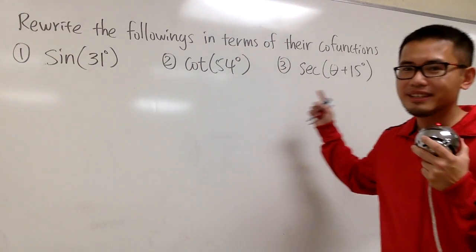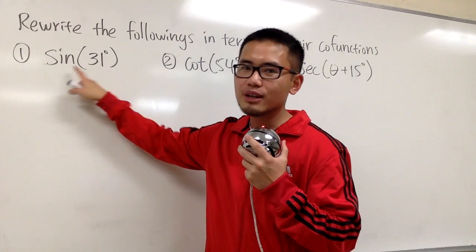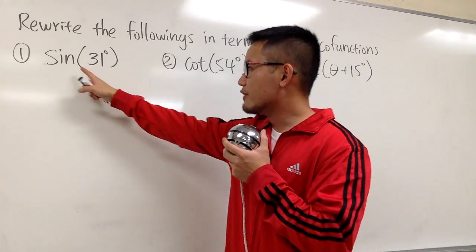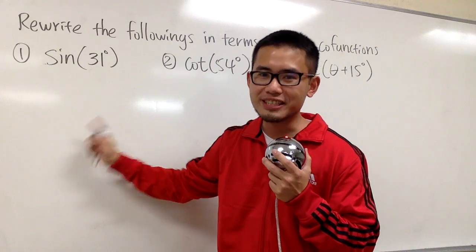Okay, we're going to rewrite the followings in terms of their co-functions, and let's look at the first one. Here we have sine of 31 degrees, and of course, we have sine right here. Its co-function is, of course, cosine.